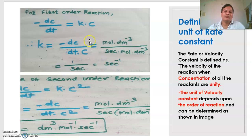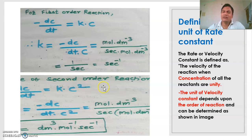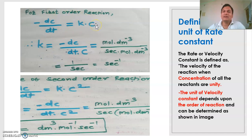The unit for the rate constant of a first order reaction is per second. In this way, you can calculate for second order reaction also. For a second order reaction, minus dc/dt is equal to K into concentration squared, where concentration has units of mole per dm³.